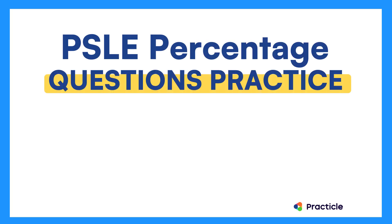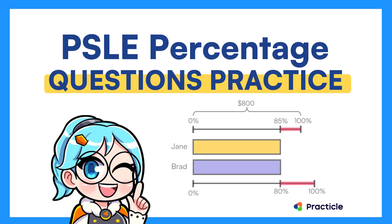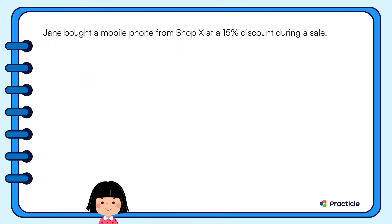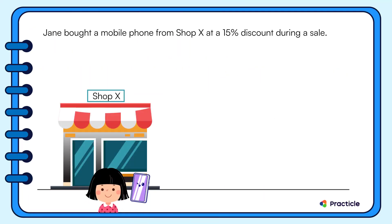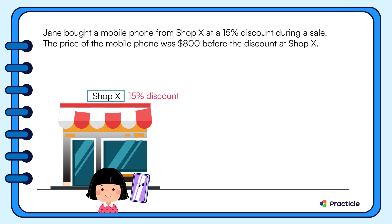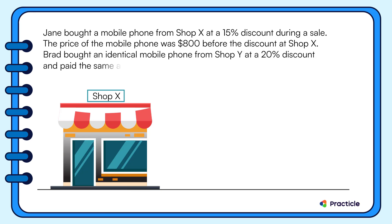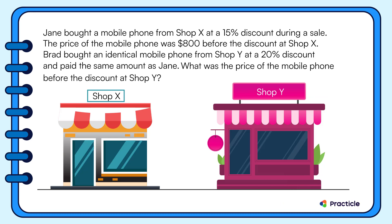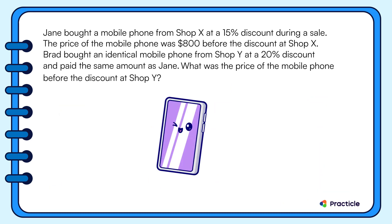Learn how to solve this percentage question so that you'll get better deals when buying things. Jane bought a mobile phone from ShopX at a 15% discount during a sale. The price of the mobile phone was $800 before the discount at ShopX. Brad bought an identical mobile phone from ShopY at a 20% discount and paid the same amount as Jane. What was the price of the mobile phone before the discount at ShopY?